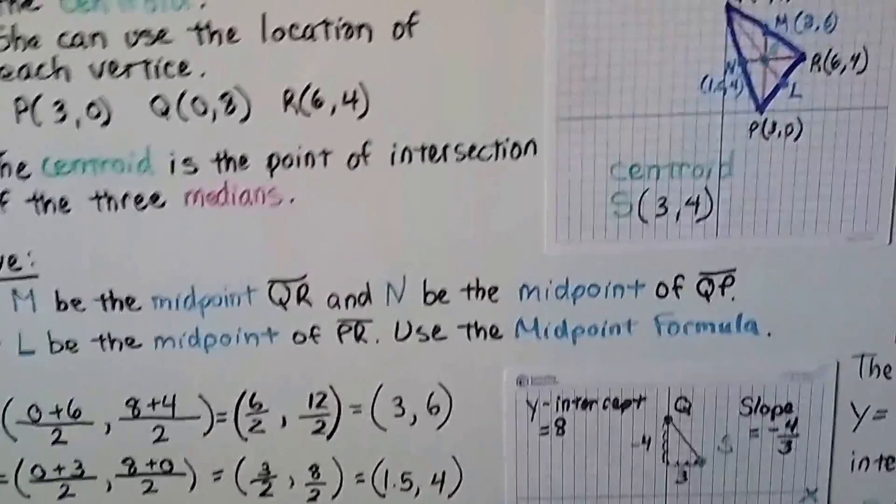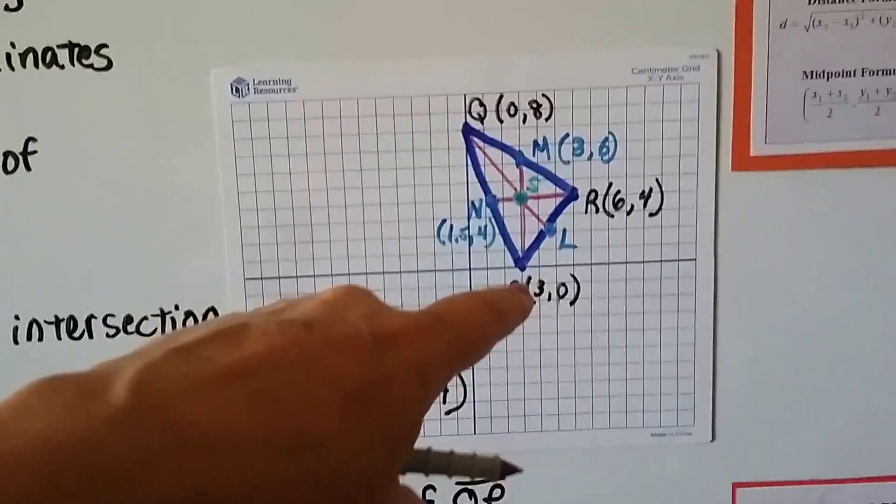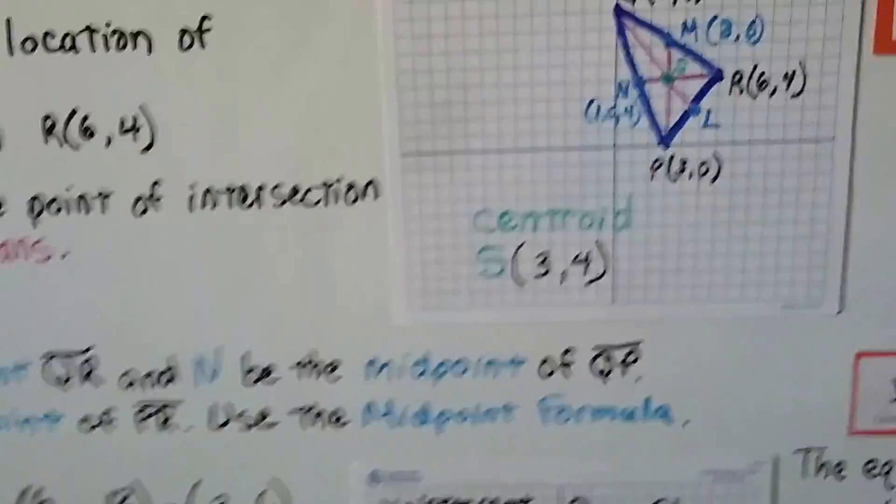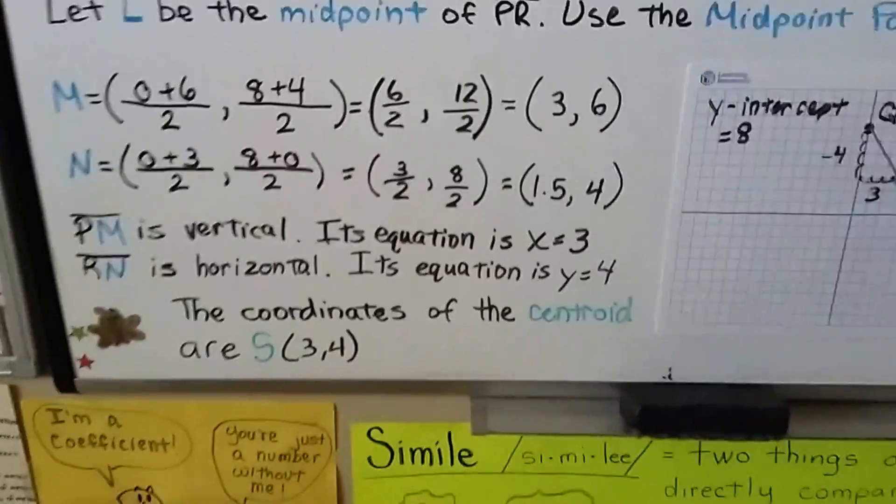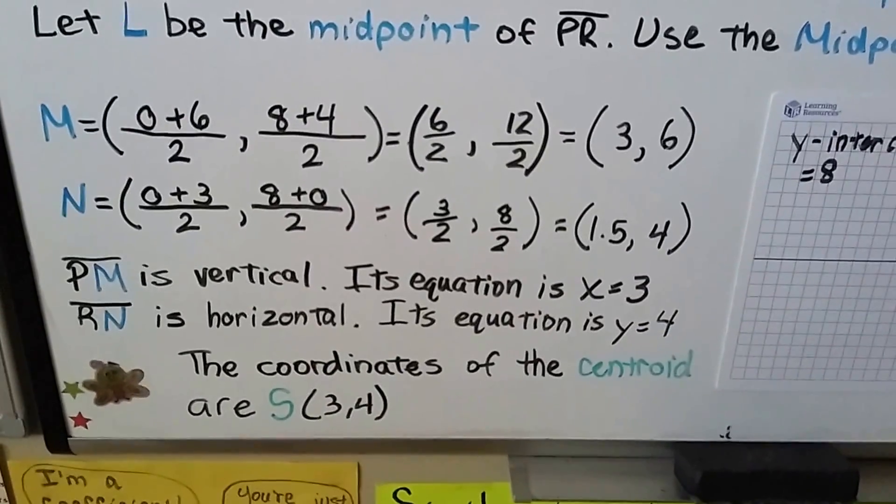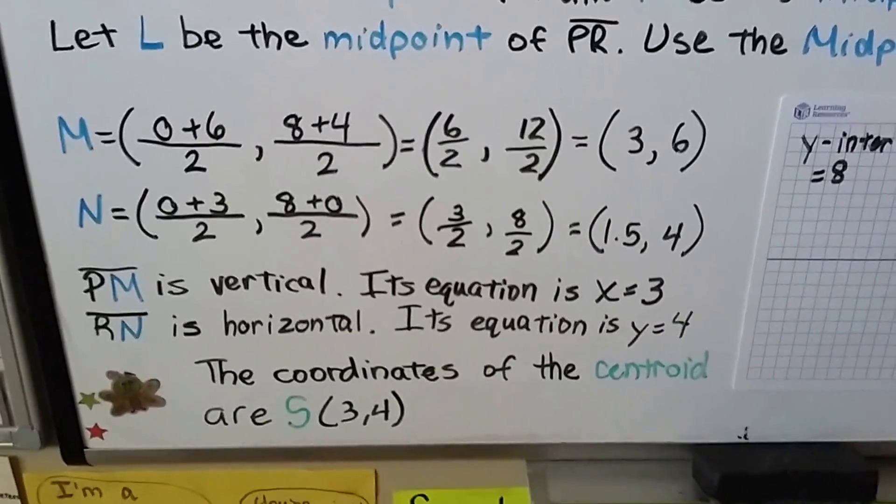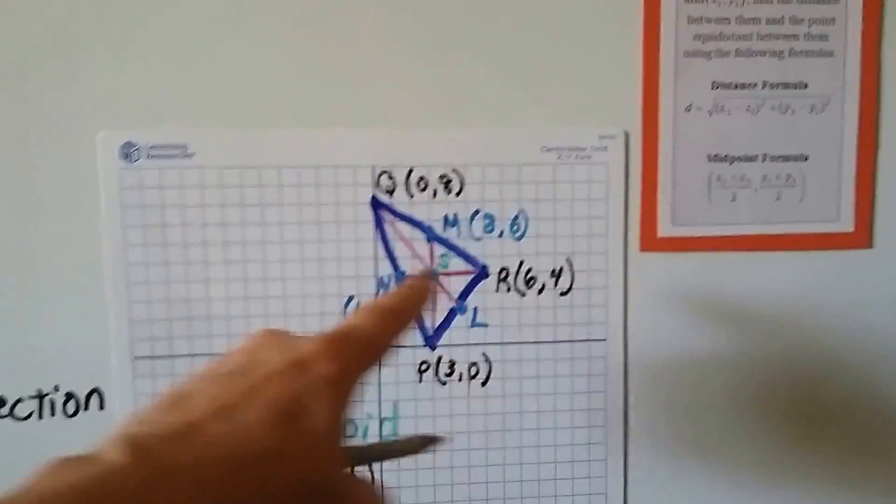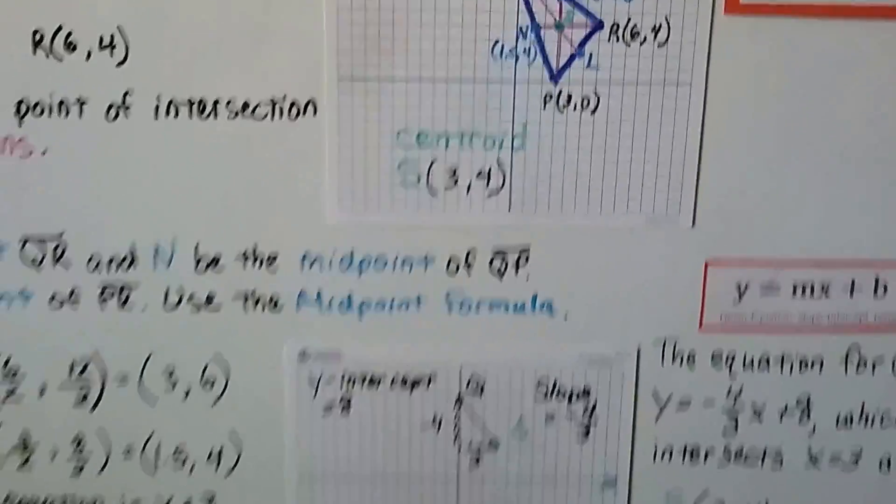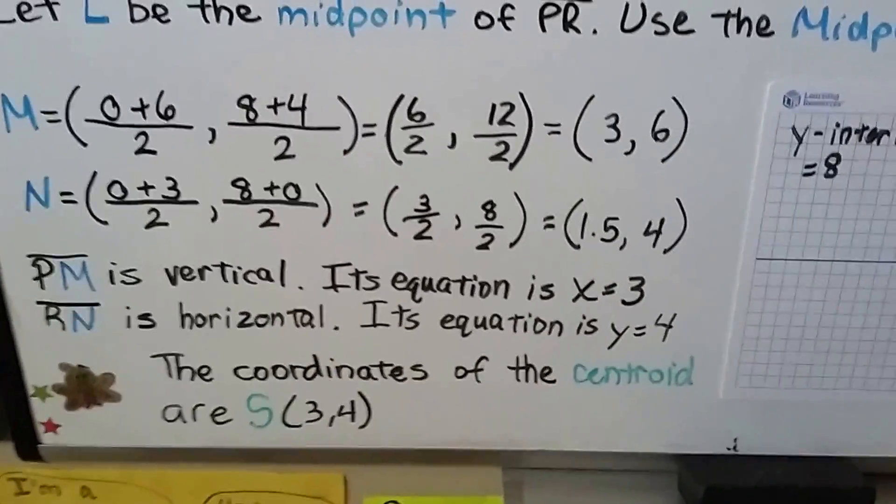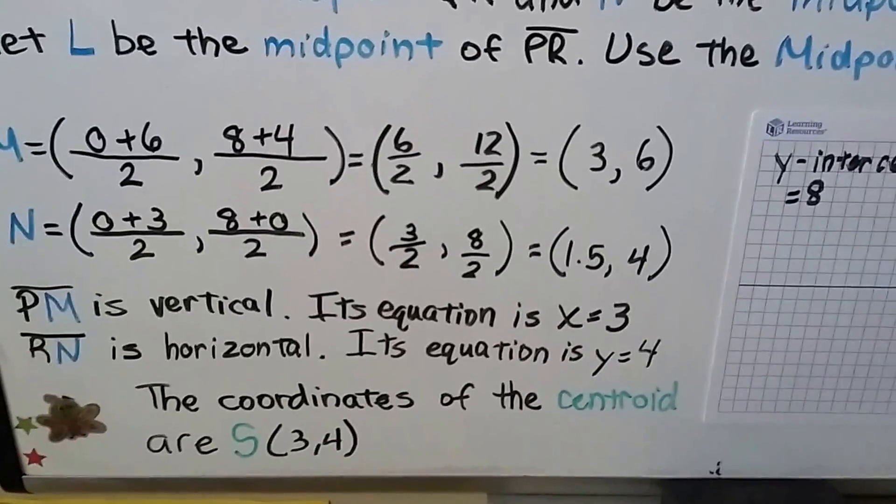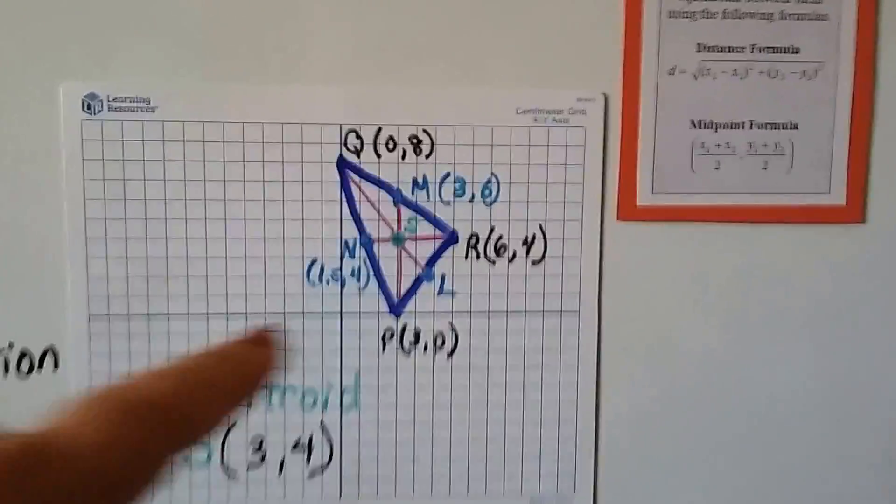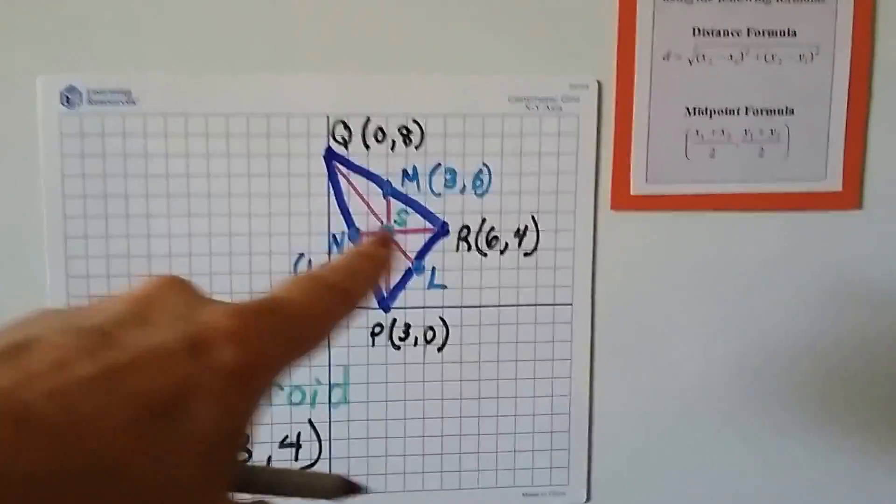Now, PM, if you look, is vertical. And RN is horizontal. Well, PM is vertical. Its equation is x equals 3, and RN is horizontal. Its equation is y equals 4, because all of the x values here are going to be 3, and all of the y values here are going to be 4. And the coordinates of the centroid are S for the point. We have 3 for x and 4 for y, so that's where our centroid is at point S right here.